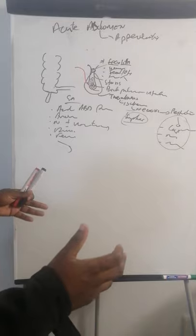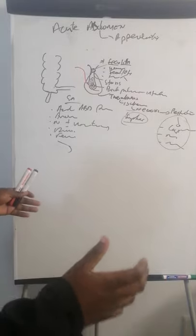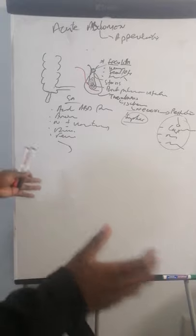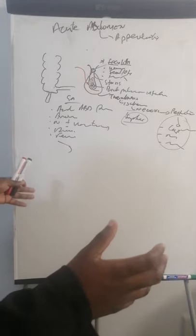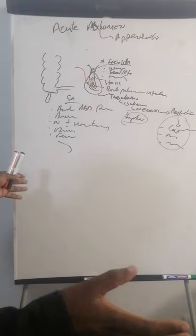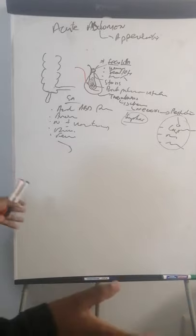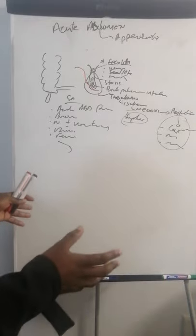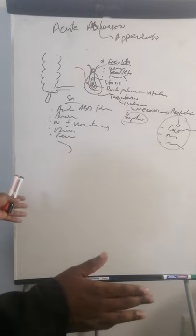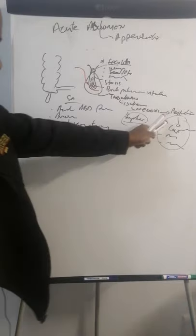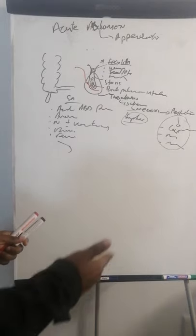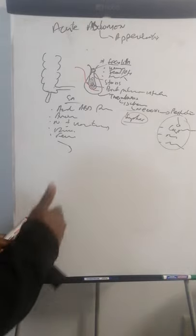If the patient is delayed going to theater, they can develop systemic inflammatory response syndrome, leading to multi-organ involvement — renal impairment, cardiogenic shock, and other organs being affected. A patient with a ruptured appendix will stay much longer in hospital than one with a simple appendix, so you don't want to delay them.